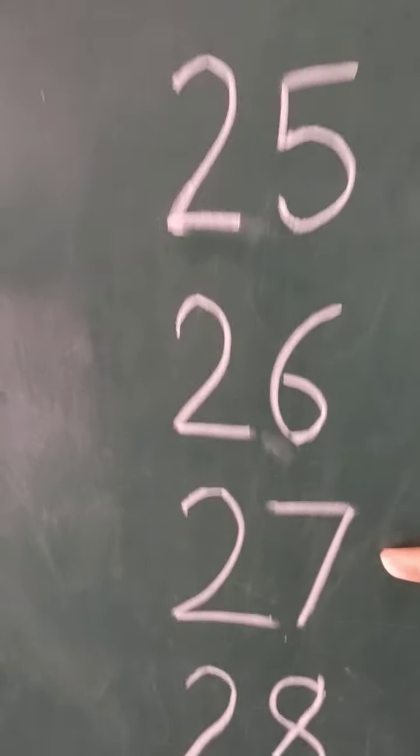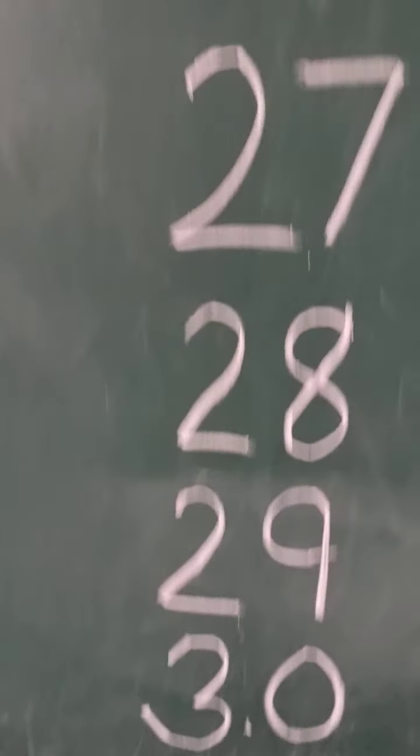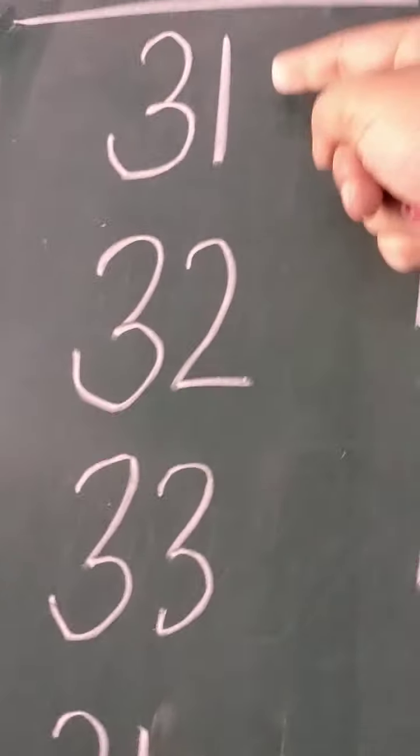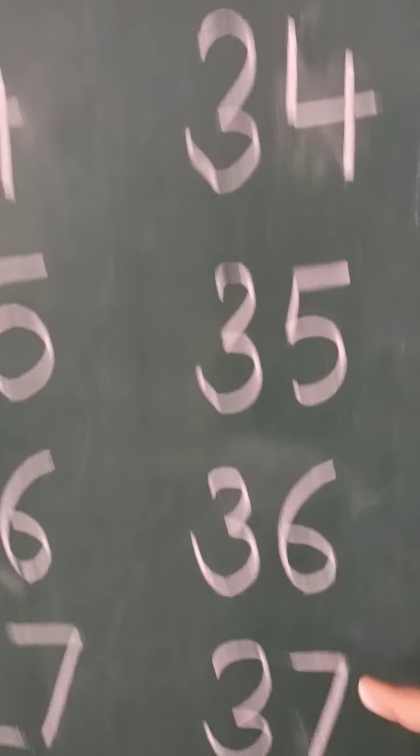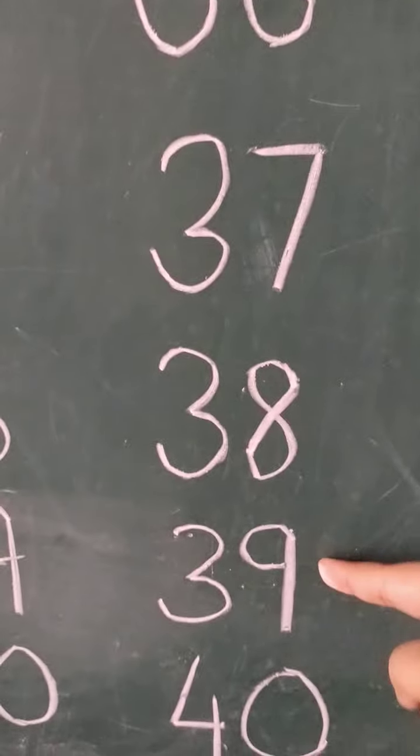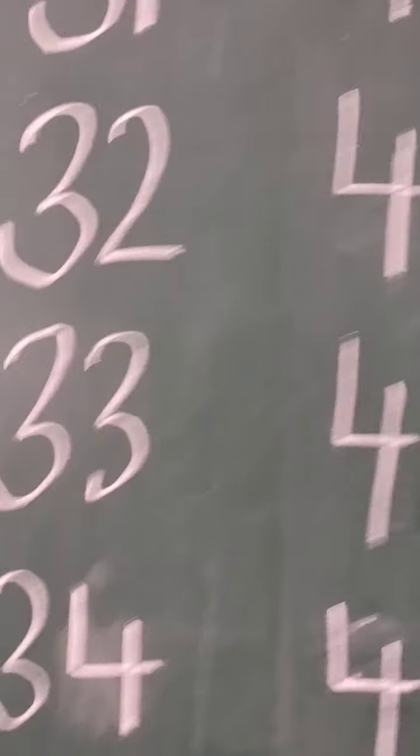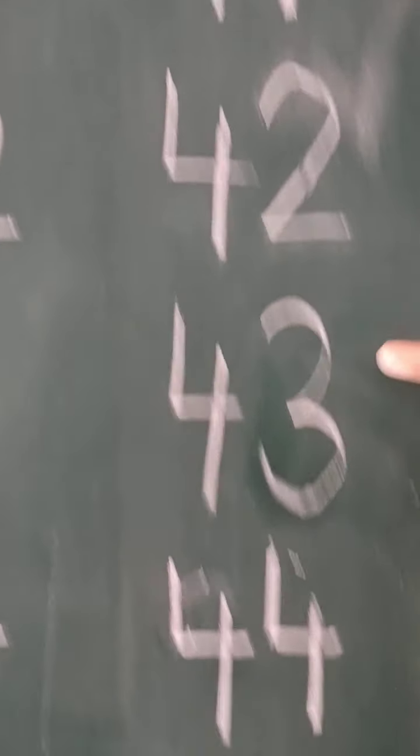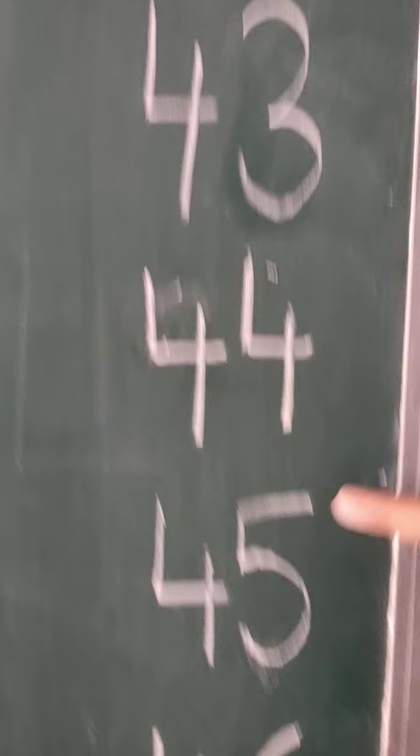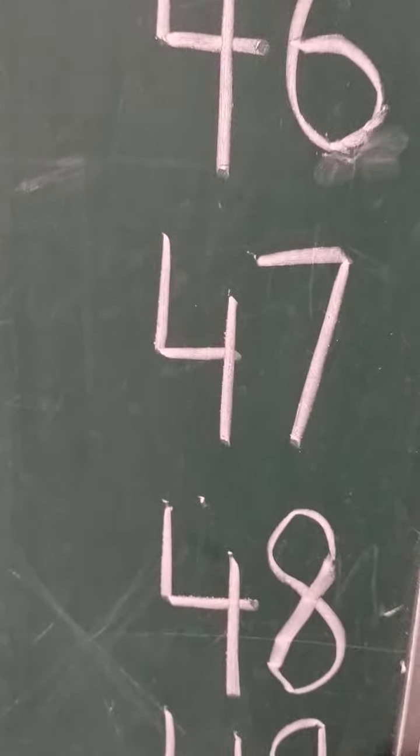Then the fourth column will be 31, 32, 33, 34, 35, 36, 37, 38, 39, 40. And then from here we'll start with 41, 42, 43, 44, 45, 46, 47, 48, 49, and then 50.